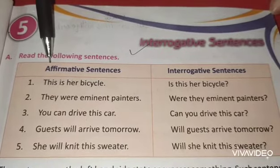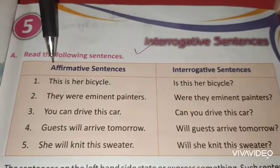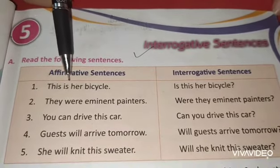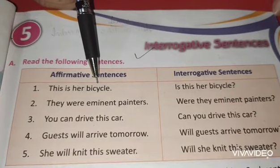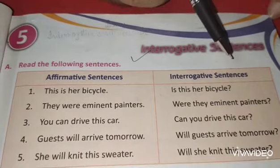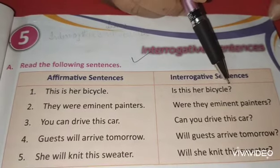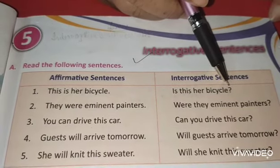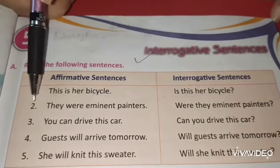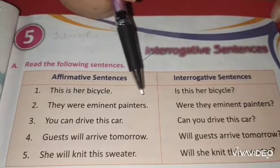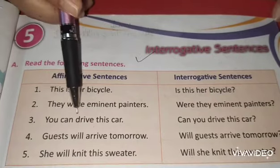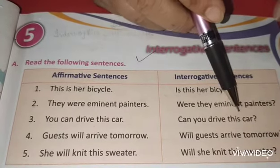Try to listen carefully and see how affirmative sentences are converted into interrogative sentences. 'This is her bicycle.' → Is this her bicycle? Interrogative sentences always need a question mark. Number 2: They were eminent painters. → Were they eminent painters? Number 3: You can drive this car. → Can you drive this car?